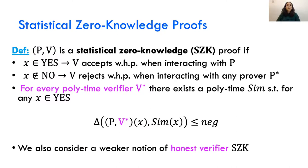We also consider a weaker notion: honest verifier statistical zero-knowledge, for which the zero-knowledge requirement is only against the honest designated verifier.